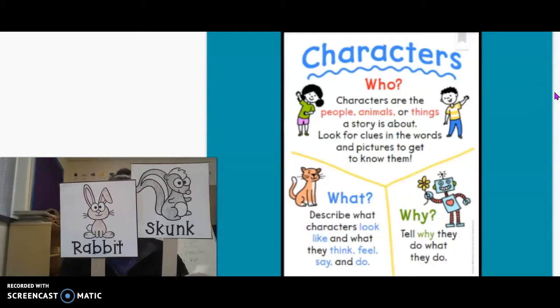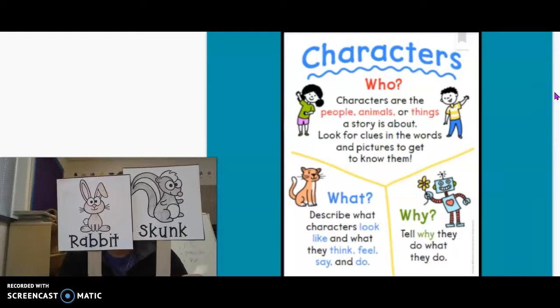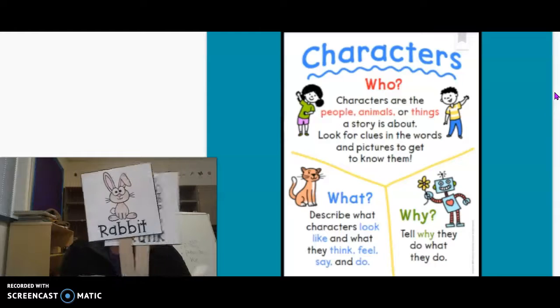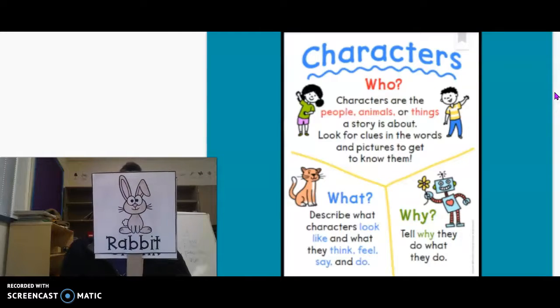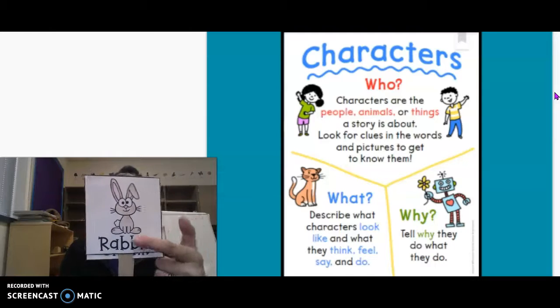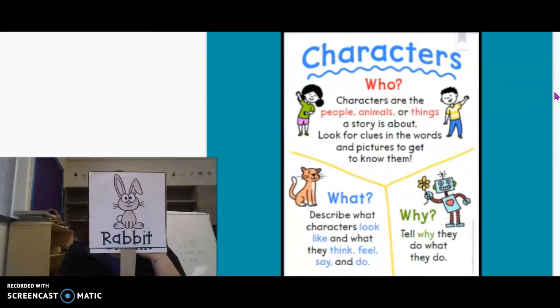Okay. Let's now talk about what. Describe what the characters look like and what they think, feel, say, and do. So let's focus on rabbit real quick. Let's talk about what rabbit looks like. It's kind of hard to see, and I can help you with this. Rabbit is actually kind of a tan. He's kind of tan.